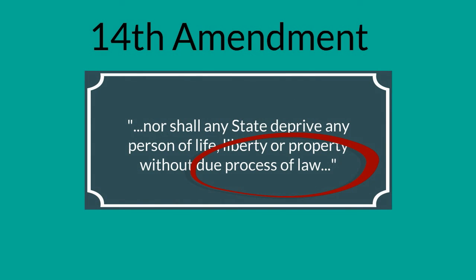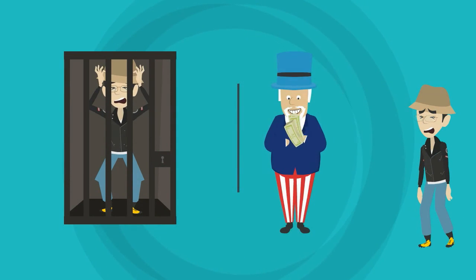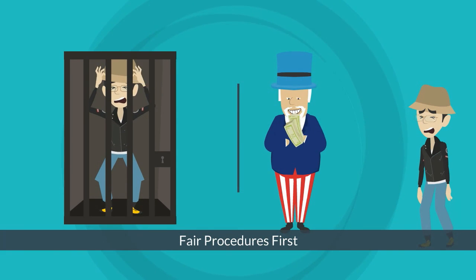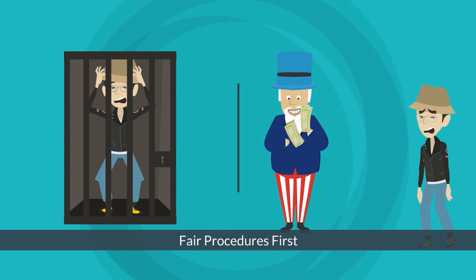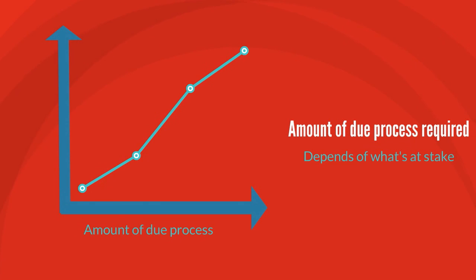So what does it mean for the state to provide someone with due process? In general terms, this means before the state takes away someone's freedom or property, the state has to apply some sort of fair procedure first. The amount of due process that's required is going to depend on what's at stake.